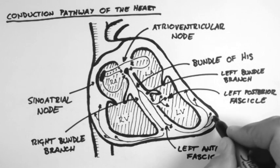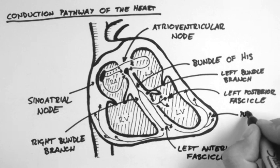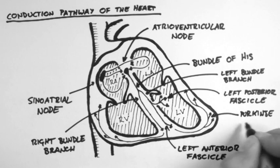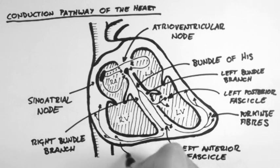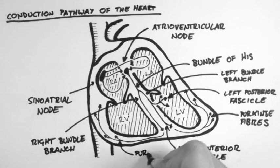The signal then spreads out through these Purkinje fibers which distribute the signal through the ventricles. And there are Purkinje fibers in both the left and right ventricles.